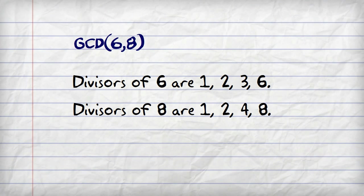The C stands for common, so we look for common divisors, which in this case are 1 and 2. And G stands for greatest, so we look for the greatest common divisor which is 2.